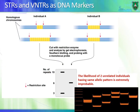Here's an example. For individual A, looking at STRs or certain VNTRs, on one chromosome you have 3 repeats, and on the other chromosome you have 10 repeats.